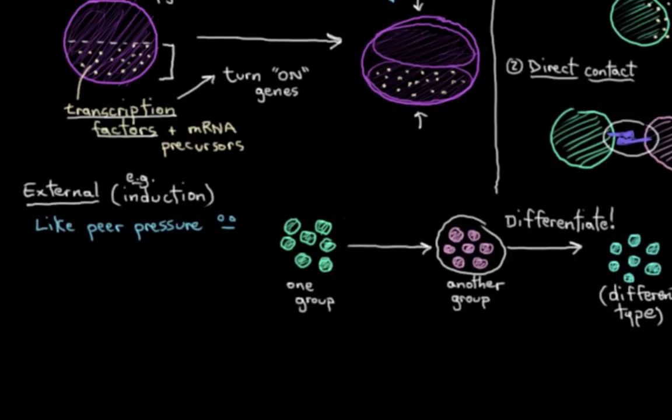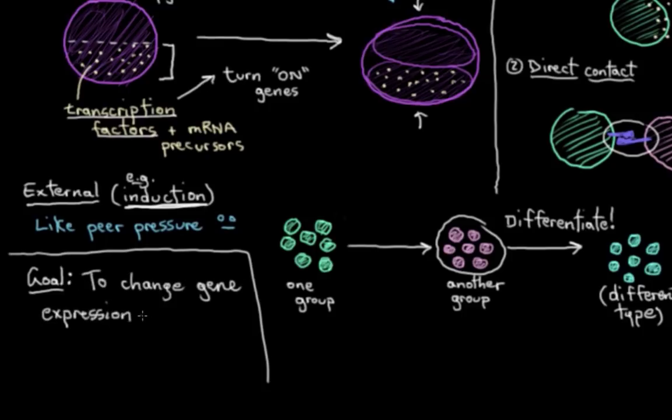And so on that note, I'll just remind you, remember the goal here with the cytoplasmic determinants, those transcription factors I talked about earlier, and then all these signals that you get in induction, remember the goal is to get cells to change their gene expression. To flick on or flick off certain genes, which ultimately is what causes cells to differentiate into other more specialized cells.